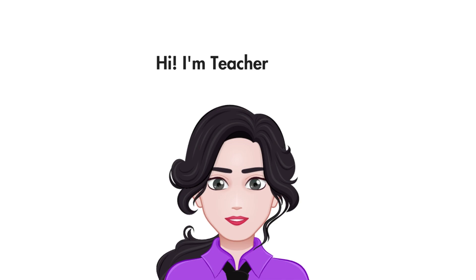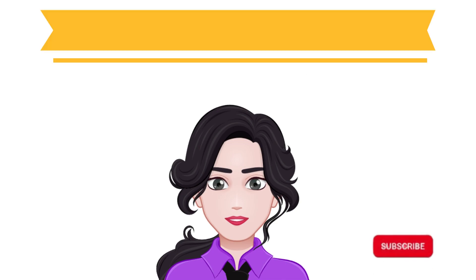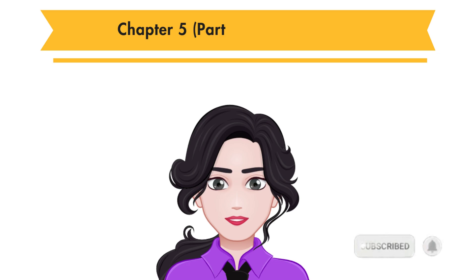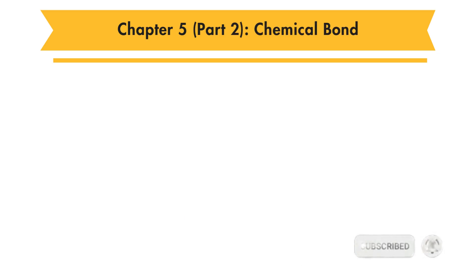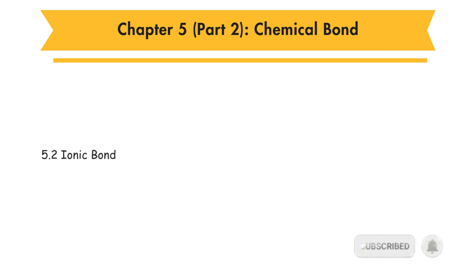Hi, I am Teacher Daisy. Now let's learn Form 4 Chemistry Chapter 5: Chemical Bond, Part 2. In this part, you will learn 5.2 Ionic Bond.